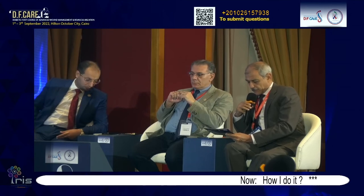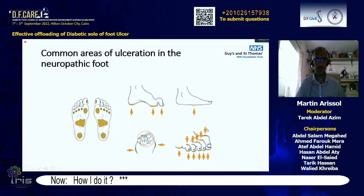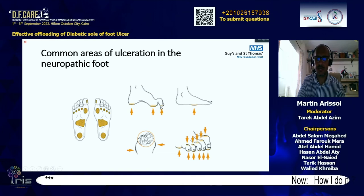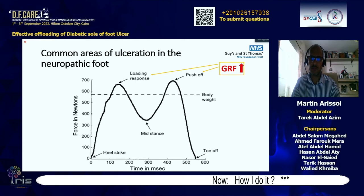Thank you, Dr. Schmidt. Now the final presentation in this session by Dr. Martin on effective offloading of diabetic foot ulcers. To recap about neuro-ischemic feet in our diabetic population: common areas of ulceration are high-pressure points. With a neuropathic foot, you develop a high cavoid foot, creating high-pressure points across the whole plantar area — at heel strike and at push-off across the metatarsals and hallux.